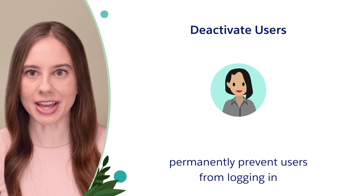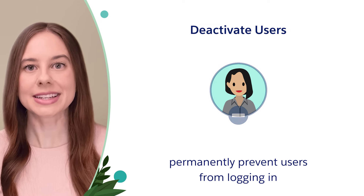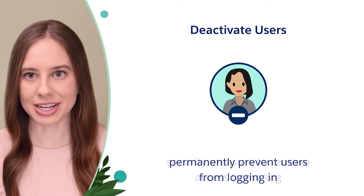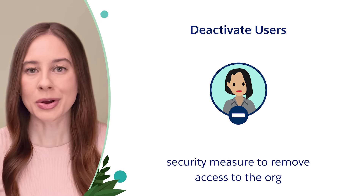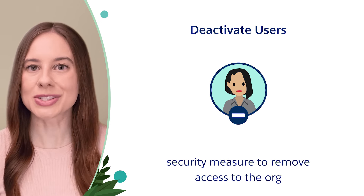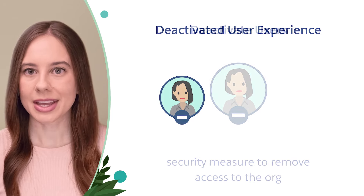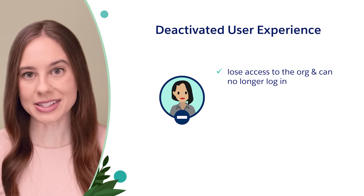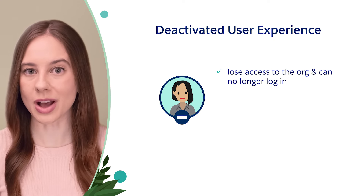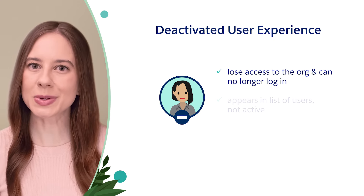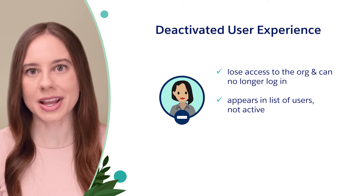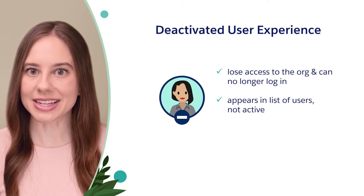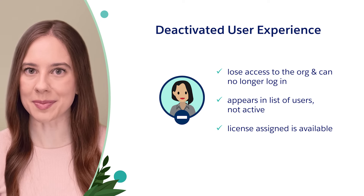If you need to permanently prevent a user from logging in, deactivate the user. When a user leaves an organization, as a security measure, we want to take away their access to the org's data. When you deactivate a user, the user loses access to the org and can no longer log in. The user will still appear on a list of users, but the active checkbox is deselected, and the license assigned to that user is freed up.